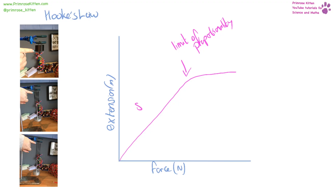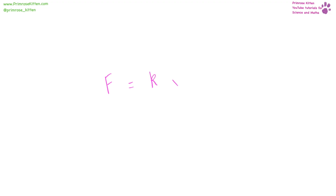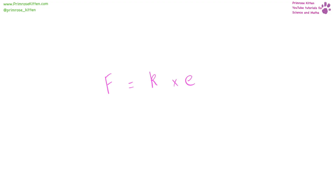Before the limit of proportionality, the spring will stretch — the more force added, the greater the extension. After we get to the limit of proportionality, no matter how much force you add, it will not stretch anymore and is potentially going to snap. Force equals the spring constant times extension. Force is measured in Newtons, extension in metres, and the spring constant in Newtons per metre.